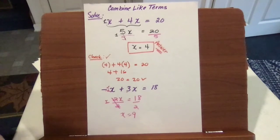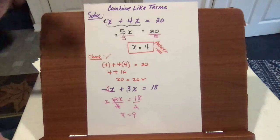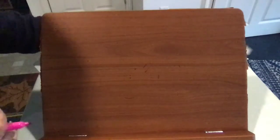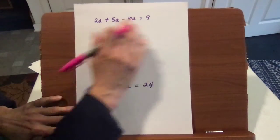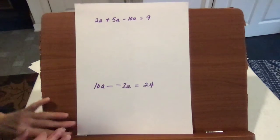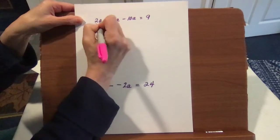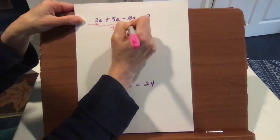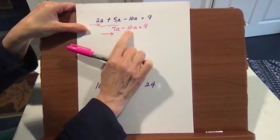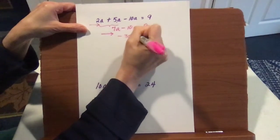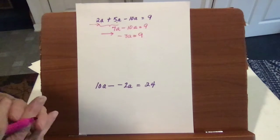Next up, we have combining like terms all on one side of the equation to solve for the variable. We go in order: 2a plus 5a is 7a, minus 10a equals 9. Then 7a minus 10a is negative 3a, equals 9. Once you've gathered all of your variable terms into one group, you're ready to solve.